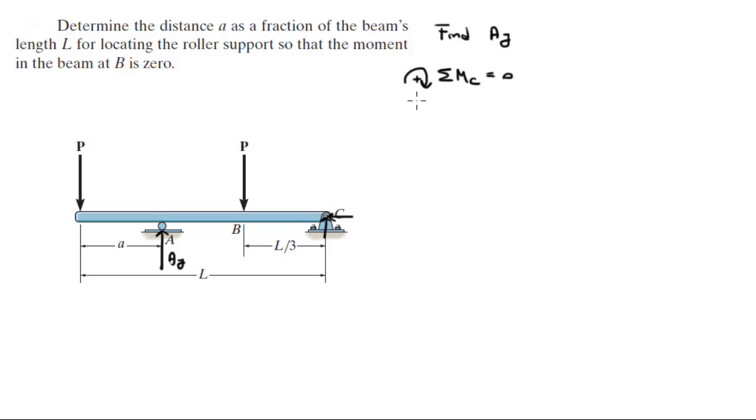And it is equal to zero because it's statics, so what we get is minus P times L because the moment created by this P right here is P times the whole length of the assembly, plus AY times (L minus A) because from C to A there's a distance of L minus this distance A.